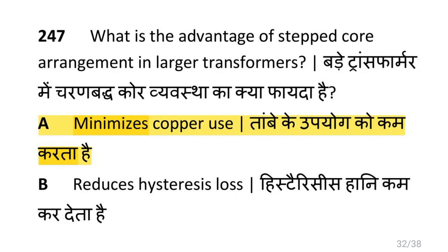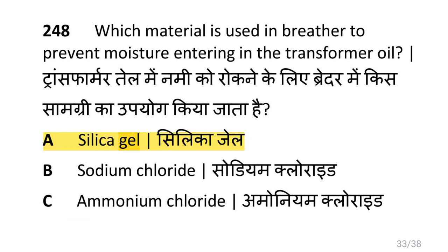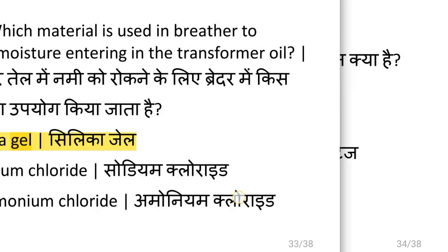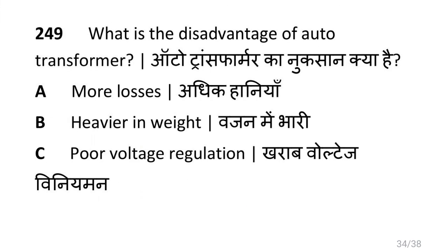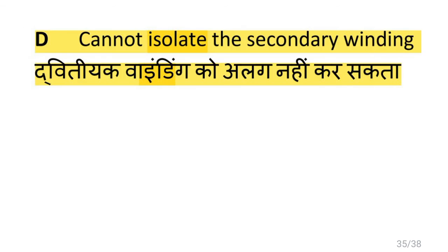What is the advantage of a stepped core arrangement in large transformers? That is to minimize copper use. Which material is used in a breather to prevent moisture from entering the transformer oil? That is silica gel. What is the disadvantage of an autotransformer? It cannot isolate the secondary winding.